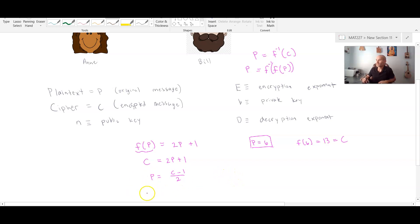So this is another way of saying that f inverse of the c value, which is c minus 1 over 2, will allow me to obtain the value of p. So back here we said c is equal to 13 based upon this encryption function.